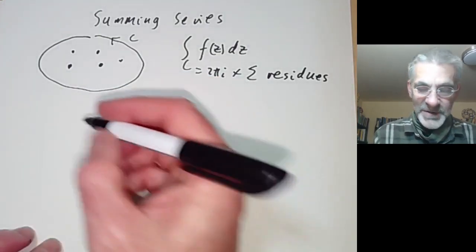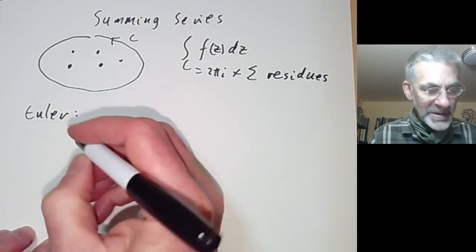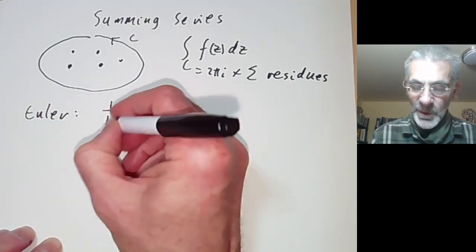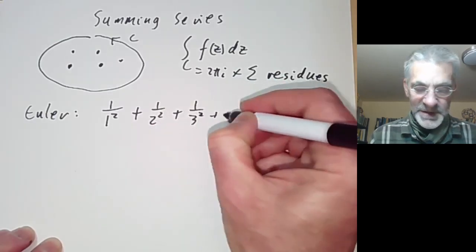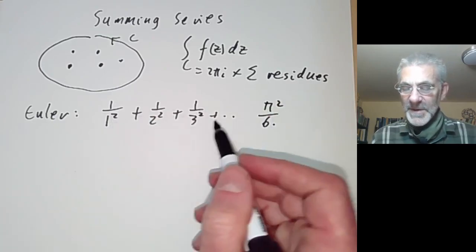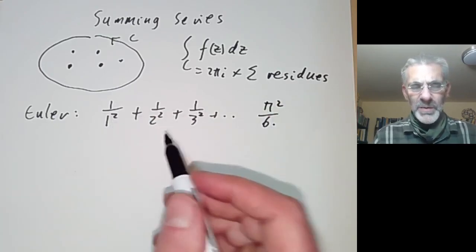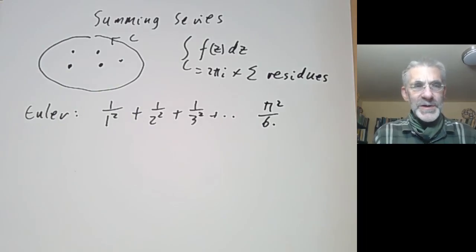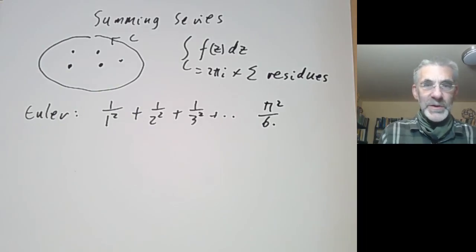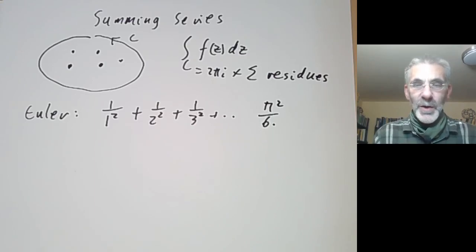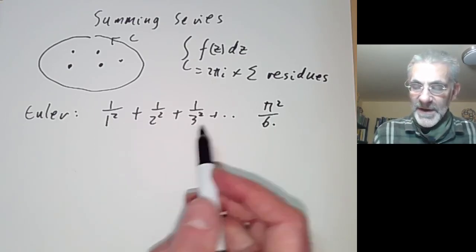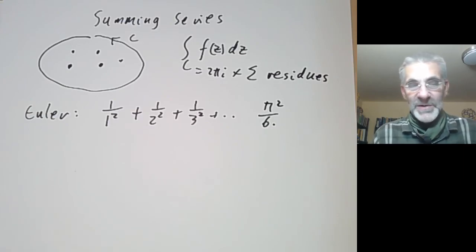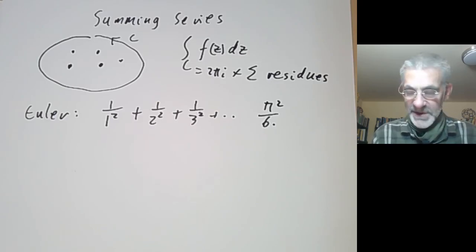The way to explain how to do it is to do an example. Let's do Euler's example where we look at 1/1² + 1/2² + 1/3² and so on. This is a very famous example — one you can't really do using the elementary techniques you learn in an introductory calculus course. You can do it fairly easily using something like Fourier analysis, but that's a rather powerful technique, roughly equivalent in strength to complex analysis.